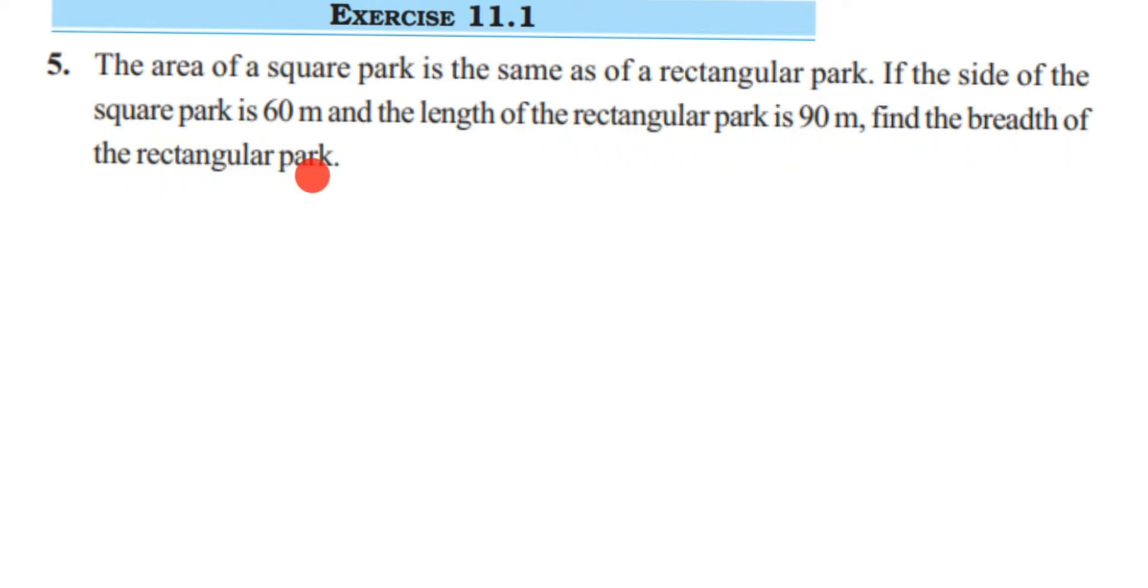They have given two things to us. One is the relationship between the square and rectangle: the area of the square park is the same as the area of the rectangular park, meaning area of square equals area of rectangle. They have given the side of the park is 60 meters and the length of the rectangular park is 90 meters. We're going to use this data and find the solution.